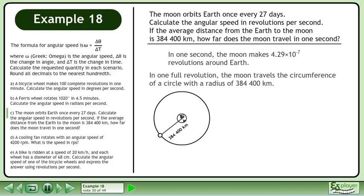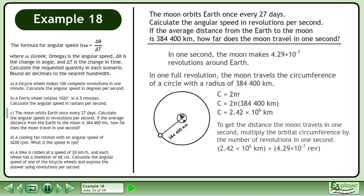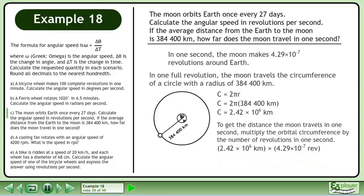In 1 full revolution, the Moon travels the circumference of a circle with a radius of 384,400 kilometers. The circumference formula is c equals 2 pi r. Plugging in 384,400 kilometers for the radius gives a circumference of 2.42 times 10 to the 6 kilometers. Multiplying the orbital circumference by the number of revolutions in 1 second gives us 1.04 kilometers.